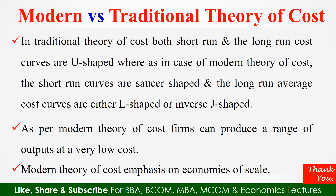Now let's discuss how the modern theory of cost differs from the traditional one. In the traditional theory of cost, both the short run and the long run cost curves are U-shaped. Whereas in the modern theory of cost, the short run cost curves are saucer-shaped and the long run average cost curves are L-shaped. As per the modern theory of cost, firms can produce a range of output at a very low cost. The modern theory also emphasizes on economies of scale. These are the basic differences between the traditional theory of cost and the modern theory of cost.